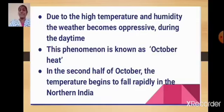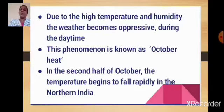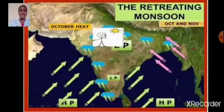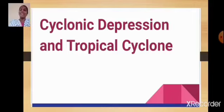In the second half of October, the temperature begins to fall rapidly in northern India. So in the first half of October we find high temperature, but in the second half the temperature begins to fall rapidly.